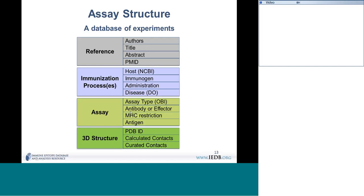If the experiment was an antibody experiment, we have a set of fields to describe the antibodies: isotype, whether it's purified or not, whether it's serum, polyclonal or monoclonal, and the name of the antibody. These fields are as detailed as the paper allows.